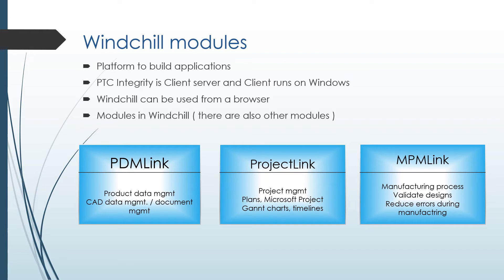ProjectLink is used for project management — you can design project plans and it has integration with Microsoft Project, so you can create tasks. MPMLink stands for Manufacturing Process Management and is used for validating designs and reducing problems or errors that might occur during engineering and production. Winchill has these three important modules along with other modules.